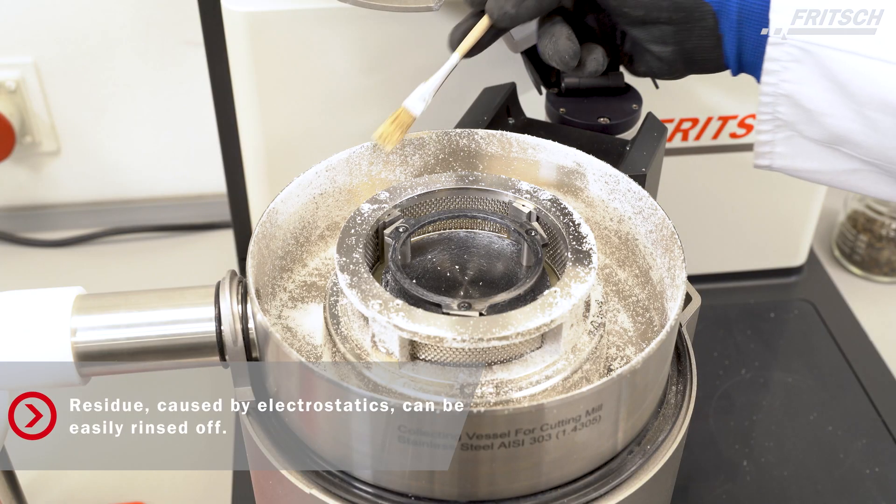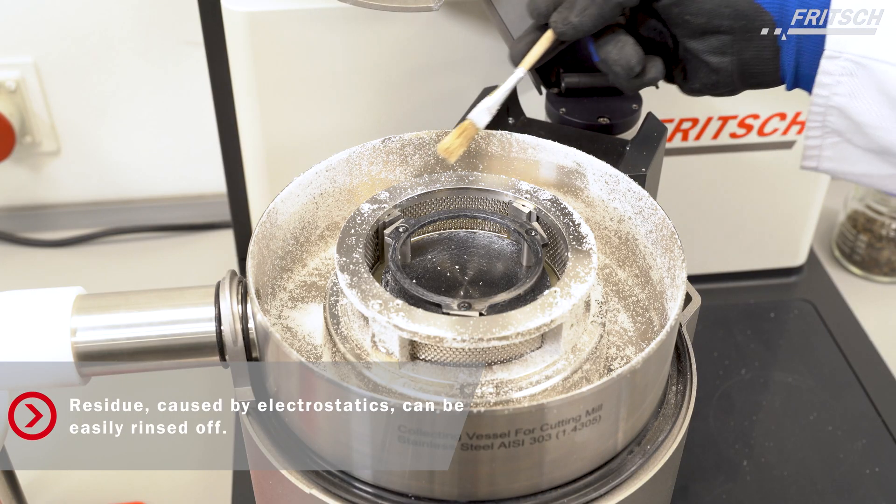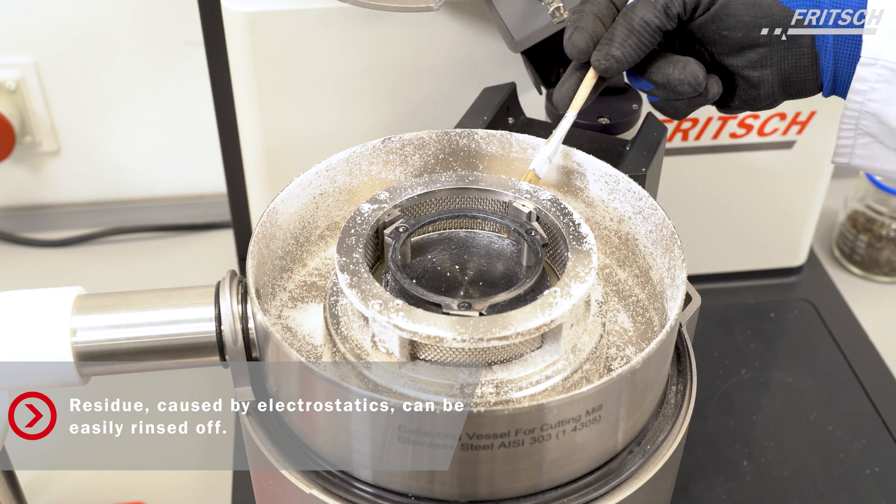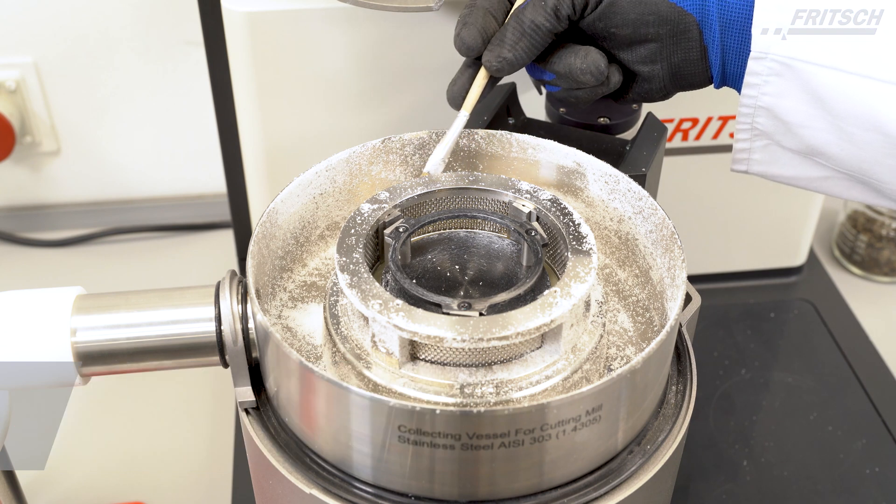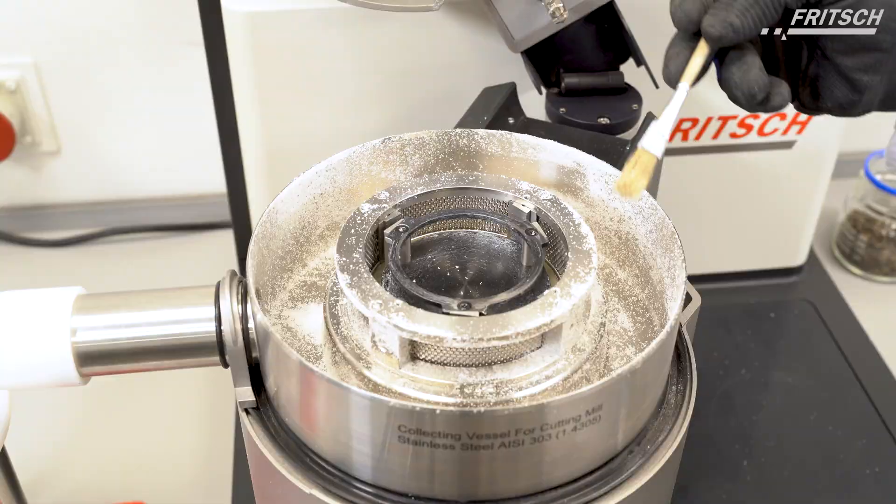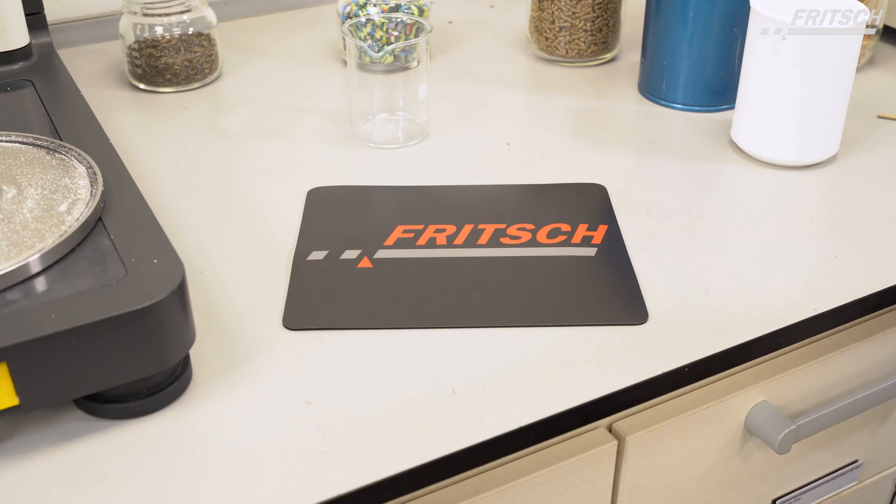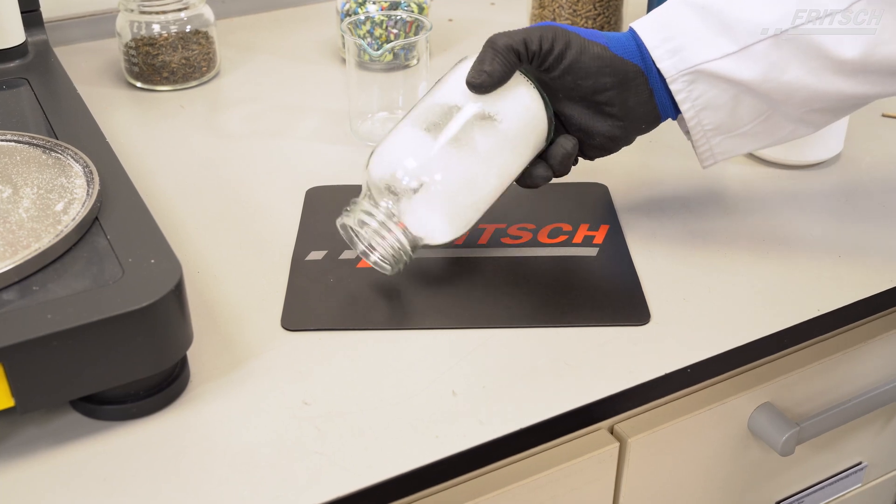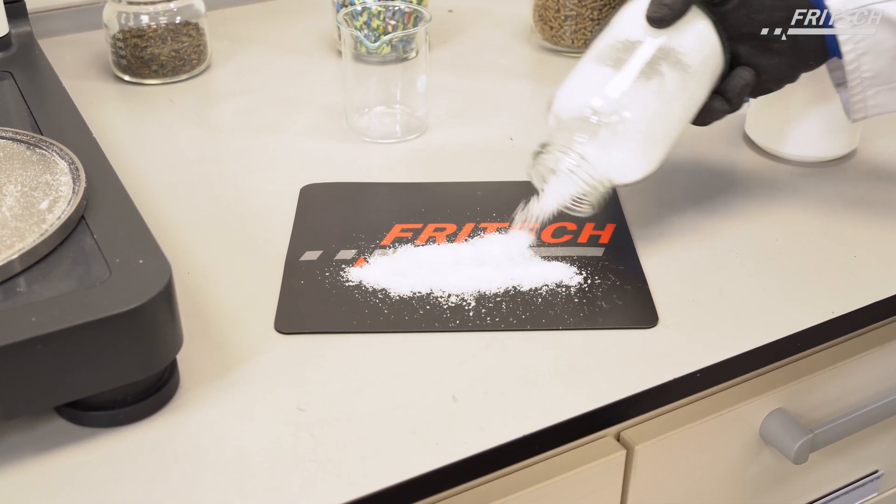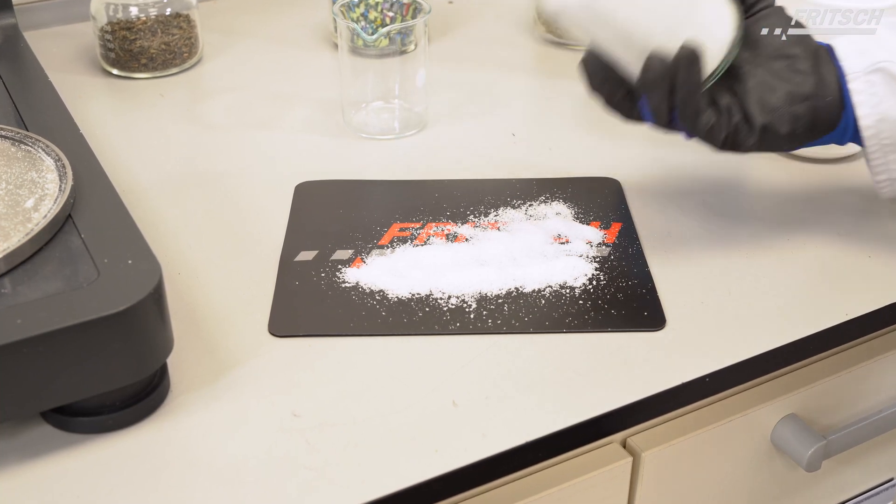As you can see there are no residues on the sieve shells and higher quantity can be ground. This was a successful grinding with a Pulverisette 14 premium line with a cutting rotor.